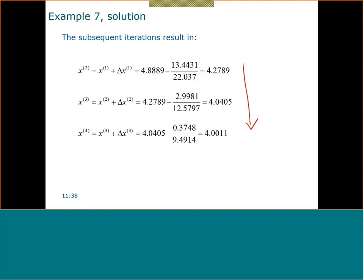Newton-Raphson is very simple but it has some problems — nothing is perfect. As engineers, we need to know the limitations. The bisection method's limitation is that convergence is very slow because you bisect the region of interest every time — the error is reduced to only half each iteration. But it guarantees convergence, provided there is exactly one answer between the brackets.